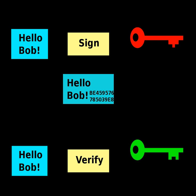A digital signature is an authentication mechanism that enables the creator of the message to attach a code that acts as a signature. The Digital Signature Algorithm, DSA, developed by the National Institute of Standards and Technology, is one of many examples of a signing algorithm. Formally, a digital signature scheme is a triple of probabilistic polynomial time algorithms, G, S, V.